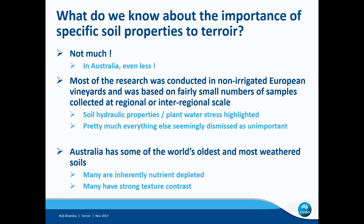Given the focus on non-irrigated situations, it's hardly surprising that soil hydraulic properties and plant water stress were highlighted in classical texts as the dominant factors impacting the expression of the soil component of terroir. Unfortunately, pretty much everything else was seemingly dismissed as unimportant, almost certainly as a consequence of the way in which those surveys were conducted. Indeed, some papers even go so far as to say that things like soil fertility or soil chemistry are unimportant, when in my view the investigation of those things was at best cursory.